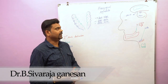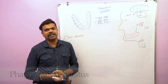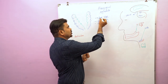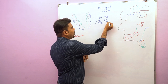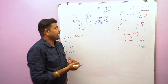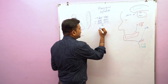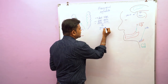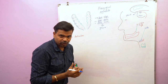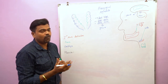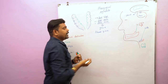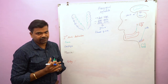Hello everyone, welcome to my YouTube channel. Today I am going to discuss the pharyngeal apparatus. This pharyngeal apparatus consists of an ectodermal cleft, endodermal pouch, and pharyngeal arch. In fish, this apparatus is involved in the formation of gills, responsible for the exchange of gases, whereas in humans this apparatus is involved in the formation of the head and neck.